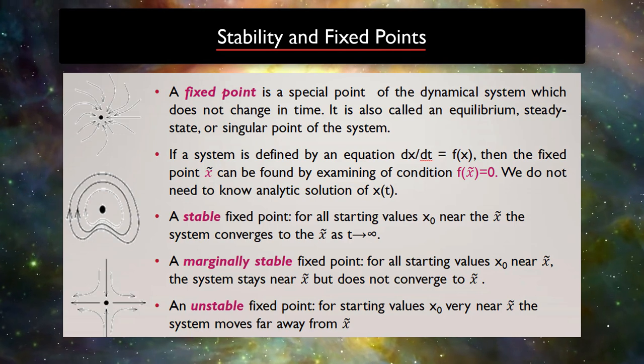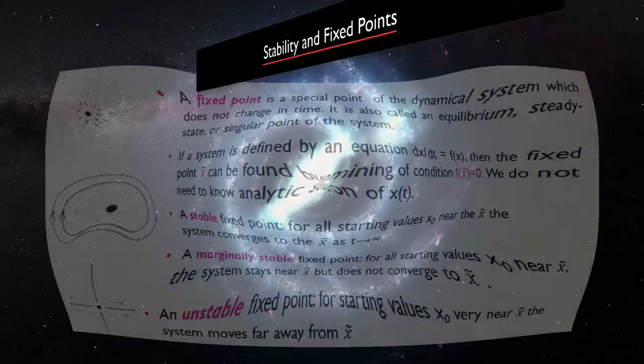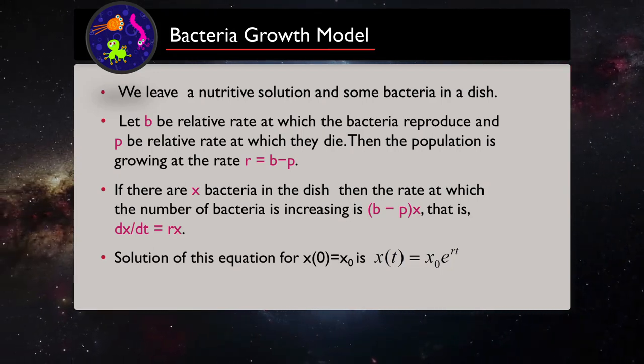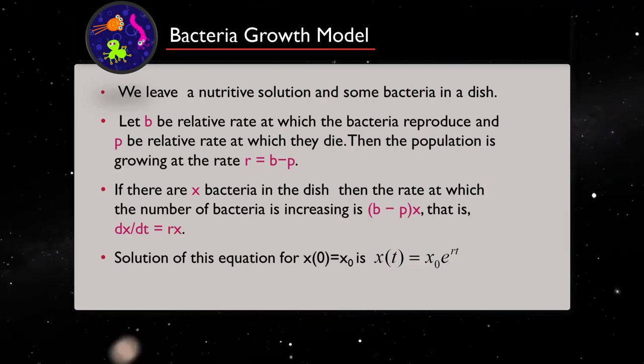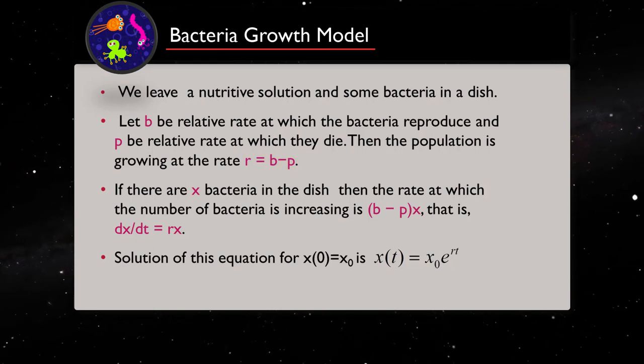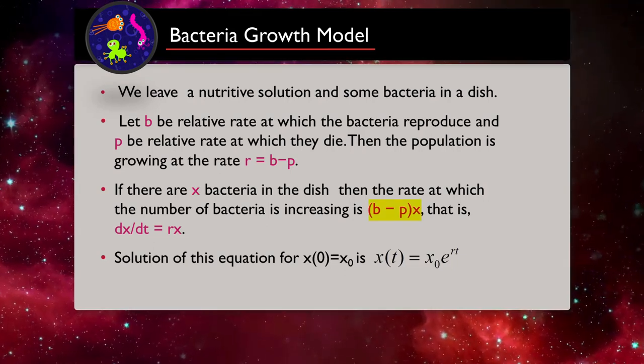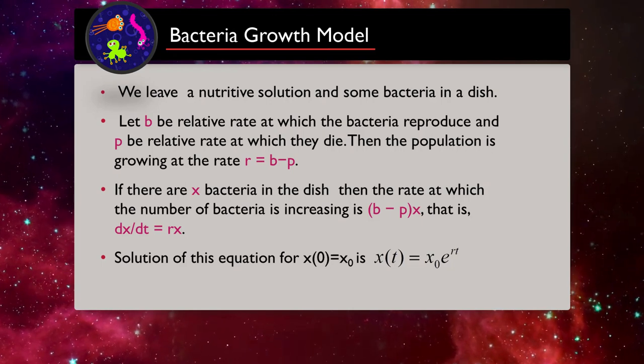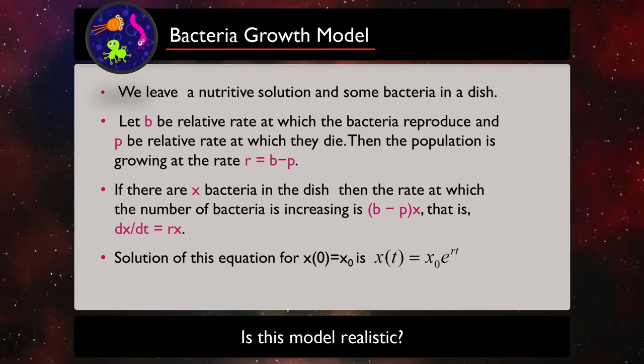So now let's finish this lecture by looking at another biological model, Bacteria Growth Model. We leave a nutritive solution and some bacteria in a dish. Let b be relative rate at which the bacteria reproduce and p be relative rate at which they die. Then the population is growing at the rate of the difference between b and p. So if we have x bacteria in the dish, then the rate at which the number of bacteria is increasing is b-p multiplied by x and we can write it as dx over dt equal to rx. If we solve this equation, the solution will be an exponential function. But is this model realistic?